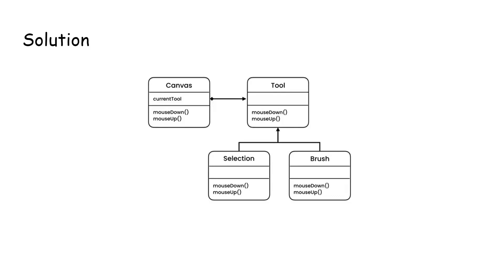To solve this problem we can use the state pattern. The canvas class has a property called current tool, which is no longer an enum but an interface called Tool. This interface has only two functions: mouse down and mouse up. We have many behaviors implementing this interface — Selection and Brush each implement mouse down and mouse up with their own individual behavior. To set the mouse down for selection, we set current tool to an instance of SelectionTool and call canvas dot mouse down.